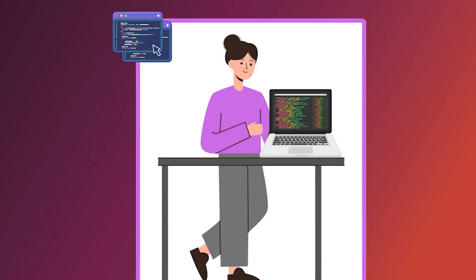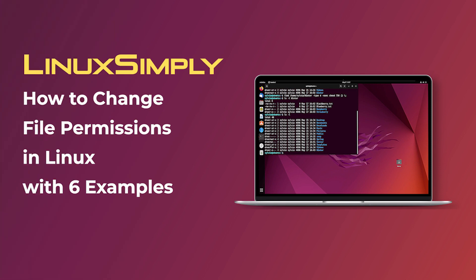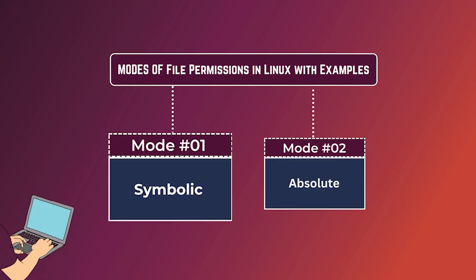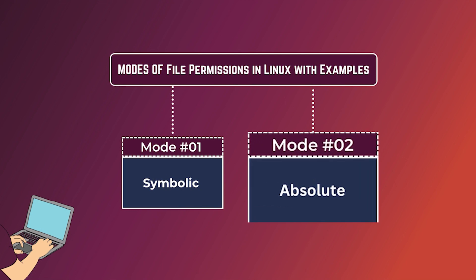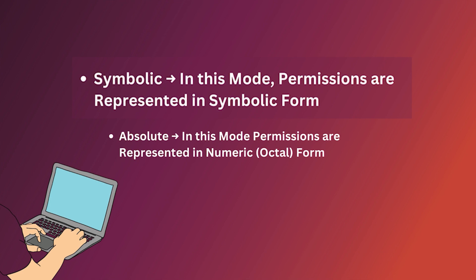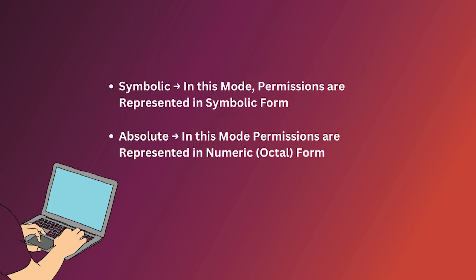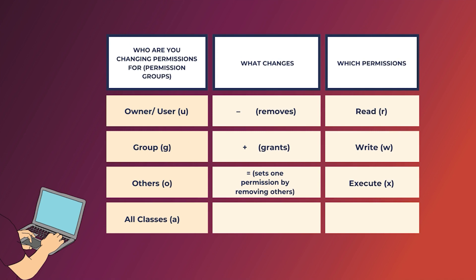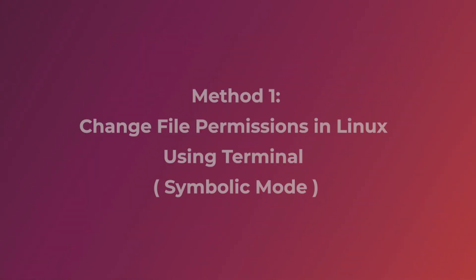Hello viewers, welcome to Linux Simply. In this video I'm going to show you a few examples of changing file permissions in Linux. There are two modes of changing file permissions: the first one is symbolic mode and the second one is absolute mode. In symbolic mode permissions are represented in symbolic form, and in absolute mode permissions are represented in numeric or octal form. If you check these charts you will get a clear idea about how these two modes work.